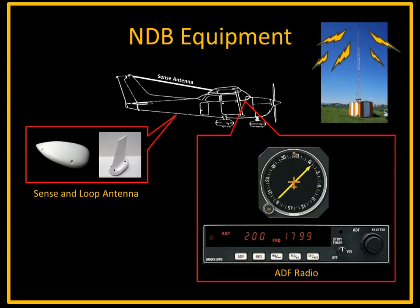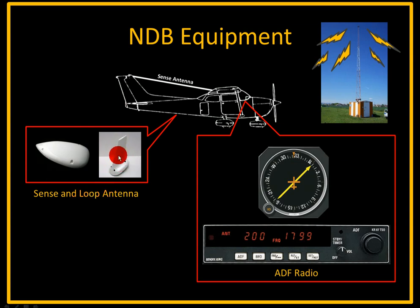Here we can see the NDB facility, represented by a radio tower with signals emanating out from it. On the aircraft side, we need two antennas. One is a sense antenna, basically running from the mid-portion of the fuselage and connecting to the tail — that wire you see extending out to the tail on an airplane. We also need a loop antenna. On a more modern aircraft it's contained within a shark fin-looking antenna, while on an older airplane it will be an actual loop, usually above the cockpit.